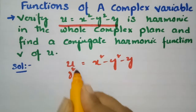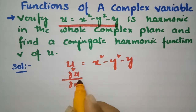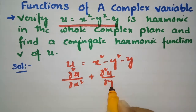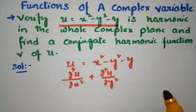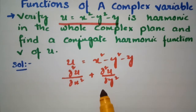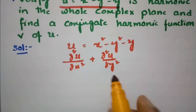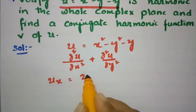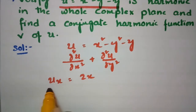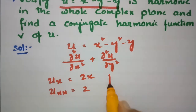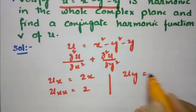To verify u is harmonic, it should satisfy the Laplacian equation: ∂²u/∂x² + ∂²u/∂y² = 0. If it satisfies this equation, we say that u is harmonic. For that, I am going to take the derivative with respect to x. With respect to x, this will be 2x, and the double derivative is 2.